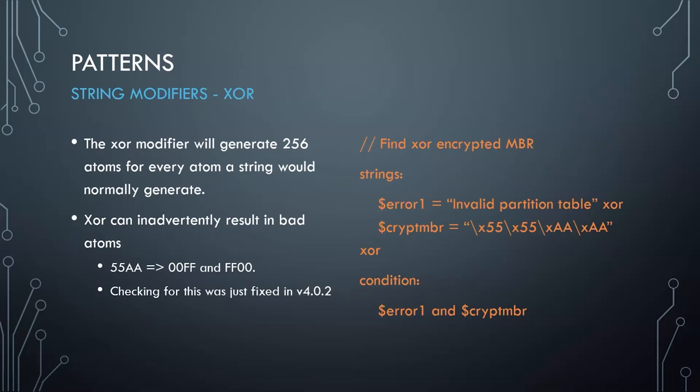As an example: if you were looking for an XOR-encrypted MBR (master boot record), you can look for an invalid partition table and for the signature at the end of the MBR, and say if you see both of these XOR-encrypted, flag it for investigation.